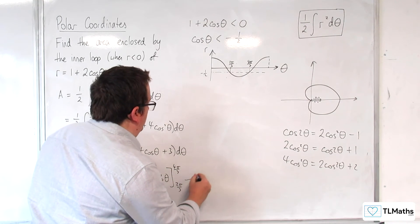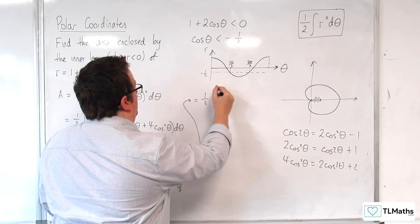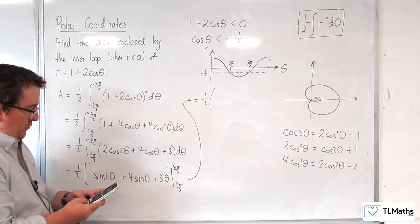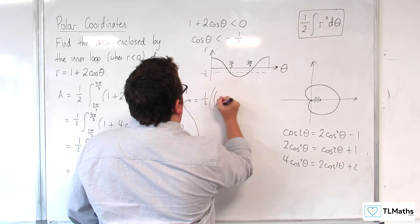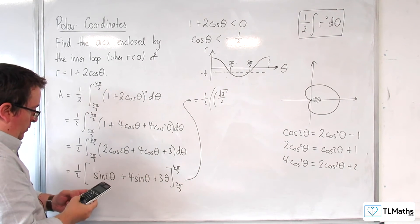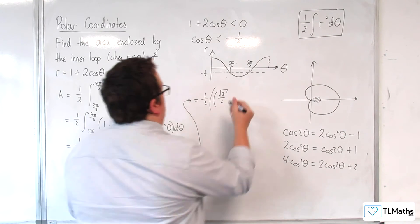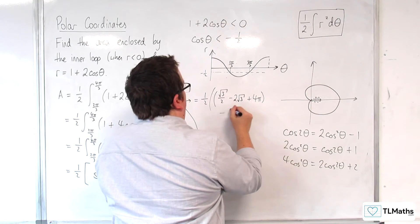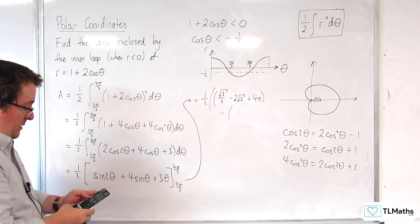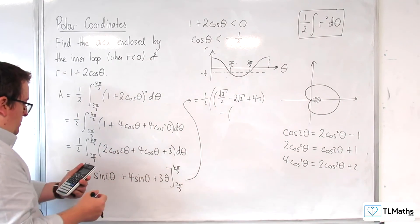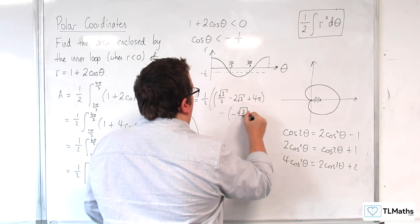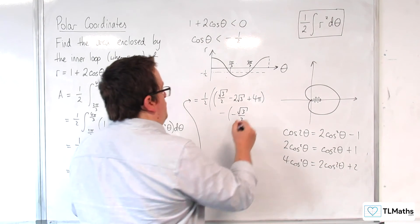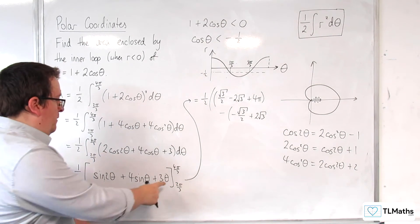Let me substitute in. Sine of 2 times 4π/3 gives root 3 over 2. Then 4 times sine of 4π/3 is minus 2 root 3. And 3 times 4π/3 is 4π. Minus — substituting 2π/3 — sine of 2 times 2π/3 is minus root 3 over 2. Then 4 times sine of 2π/3 is 2 root 3. And 3 times 2π/3 gives plus 2π.